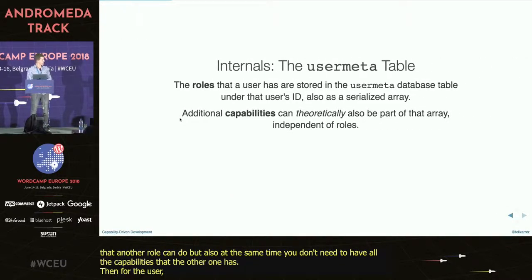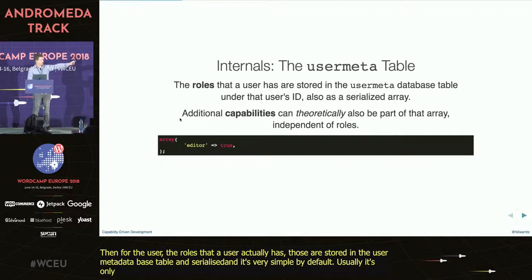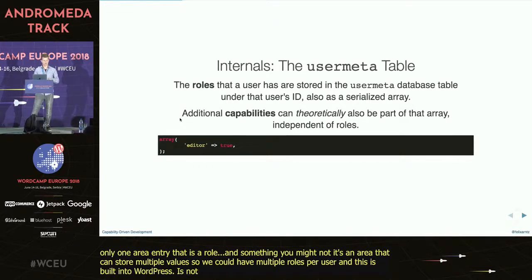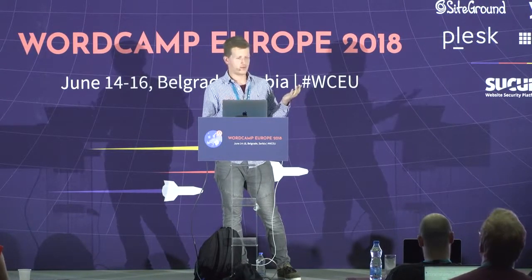The roles that a user actually has are stored in the user meta database table, also as a serialized array. It's very simple by default — usually only one array entry with the role and true to grant it. But something you might notice is it is an array, so an array can store multiple values, meaning we could have multiple roles per user. This is built into WordPress but not exposed via UI, because it's only a select with a single choice. There are plugins to enable that, and it's really simple because it's already supported by the database setup. You could even theoretically put capabilities into that array directly, but it's usually a bad idea because you should always tie capabilities to roles, otherwise it will get pretty messy very quickly.